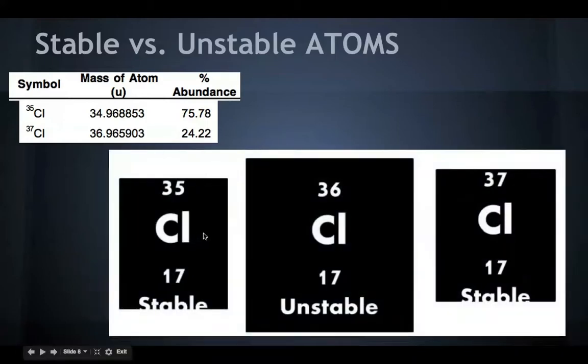Chlorine-35 is stable, chlorine-37 is stable, but chlorine-36 is not stable. And that's why it does not show up as part of the percentage in the percent abundance of the isotopes. So you're only going to look at 35 and 37, because if there was chlorine-36, it would decay, it would break down, because it's unstable.